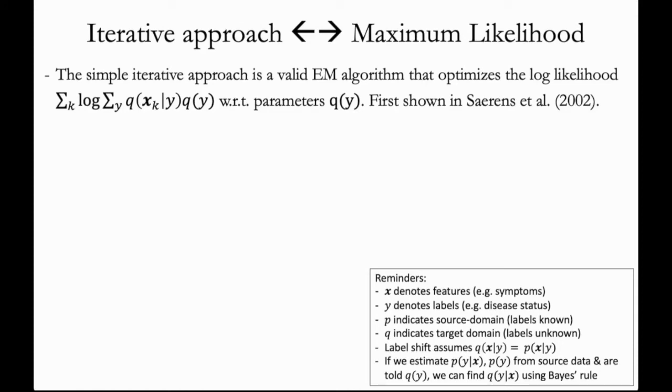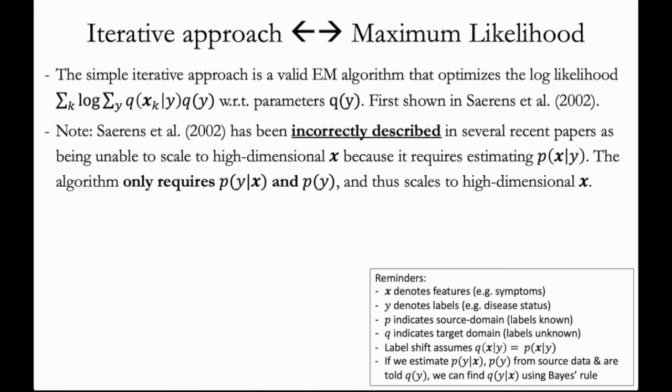It turns out that this simple iterative approach is a valid expectation maximization algorithm that optimizes the log likelihood of the data. And this was first shown in 2002. But one thing to note about this algorithm is that it has actually been incorrectly described in several recent papers as being unable to scale up to high dimensional x because it requires estimating p(x|y).